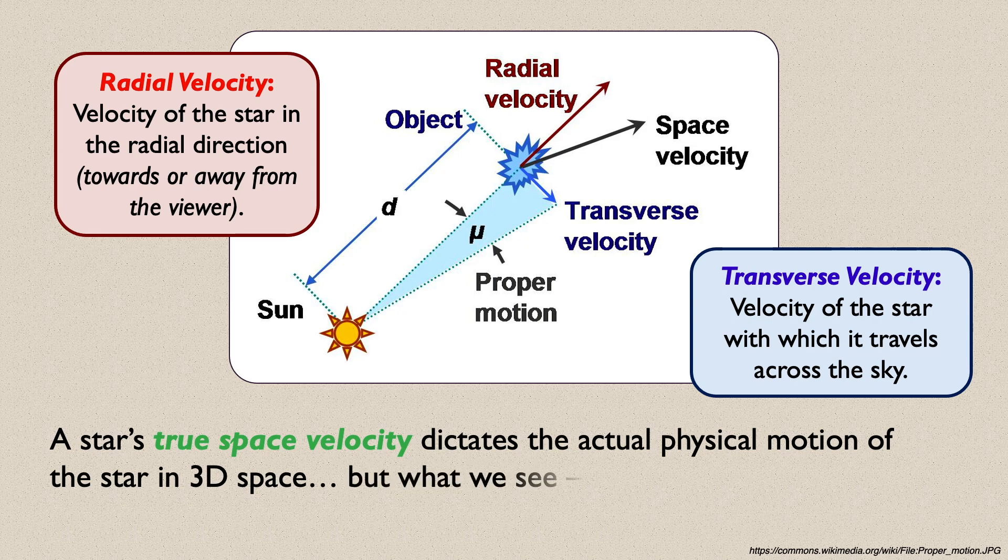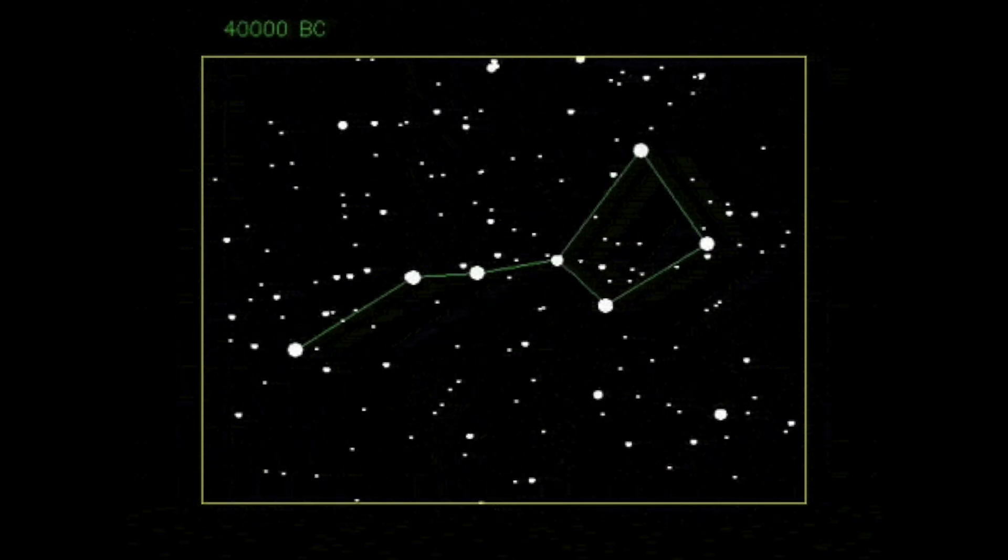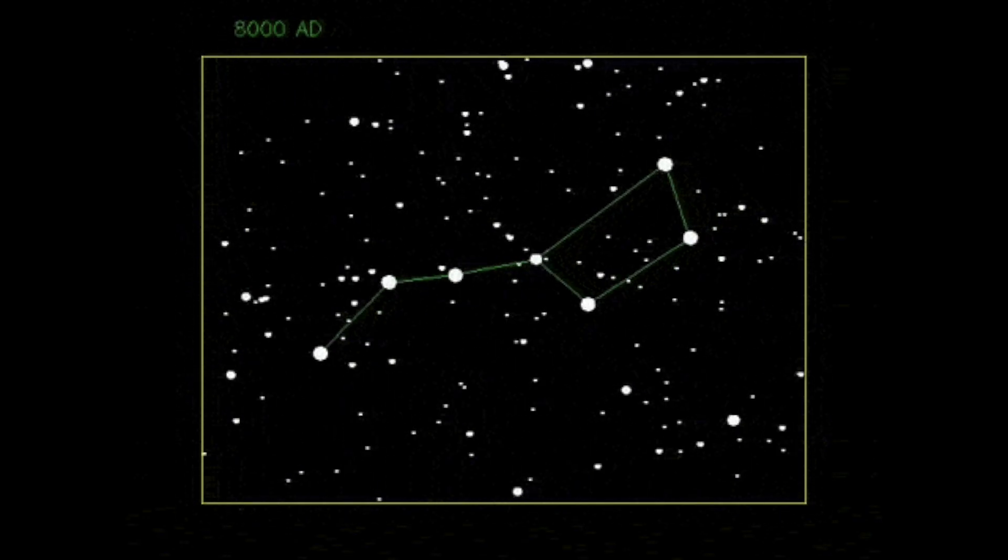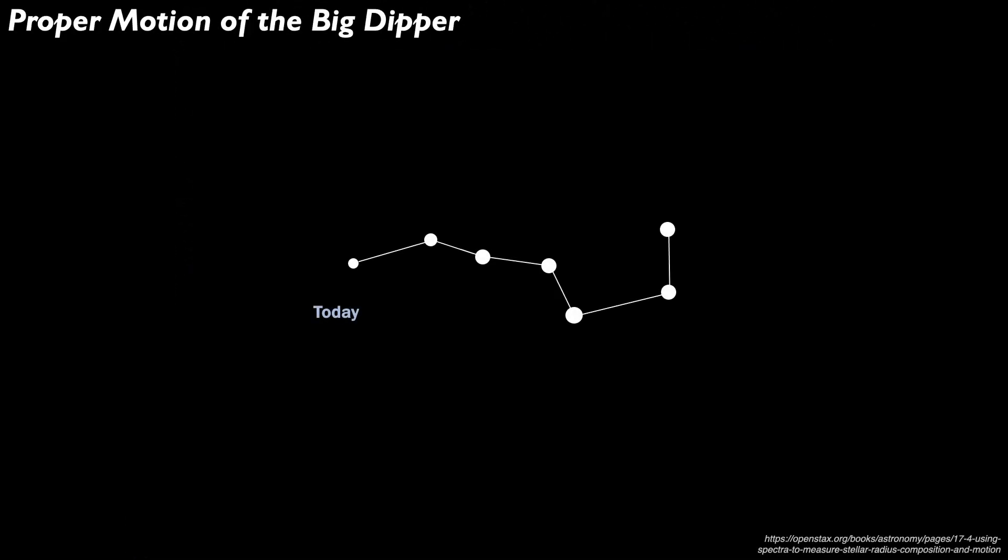Ultimately, the star's true space velocity dictates the actual physical motion of the star in three-dimensional space as it moves around the universe, but what we see, its proper motion, is based on the star's transverse velocity only.